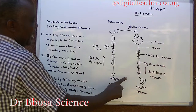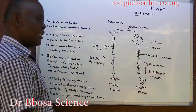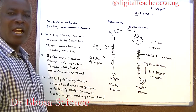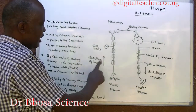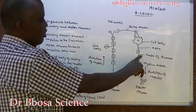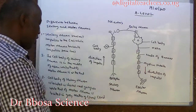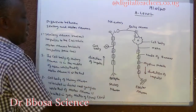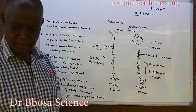Differences between the sensory and motor neuron: In the sensory neuron, impulses travel from the receptor to the central nervous system. In the motor neuron, impulses travel from the central nervous system to the effector. The cell body of the sensory neuron is in the middle of the axon, located in the dorsal ganglion of the spinal cord. The cell body of the motor neuron is at the end, located in the grey matter of the spinal cord.